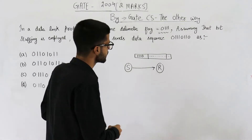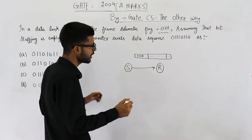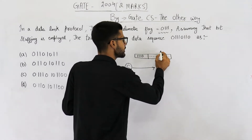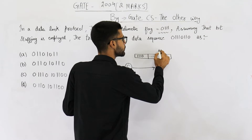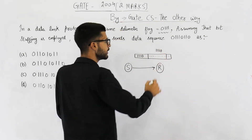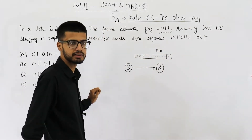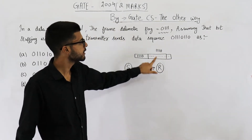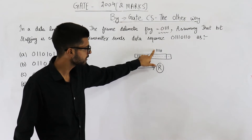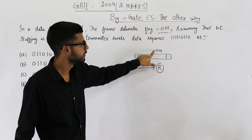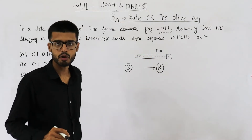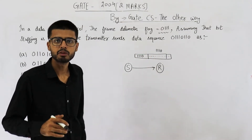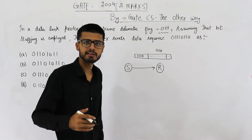But the problem is: what if the data itself contains 0111? If the data contains such a pattern, the receiver might think that the frame has ended there only. This is a problem. To solve this problem, we use bit stuffing.